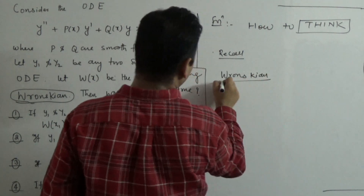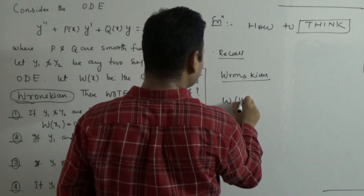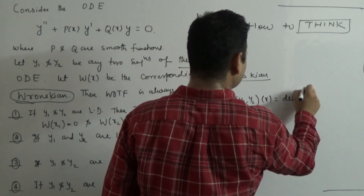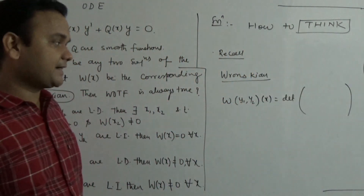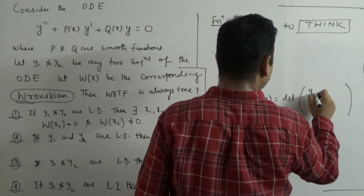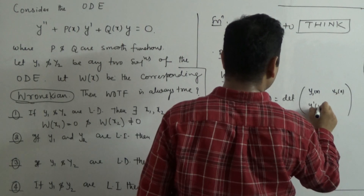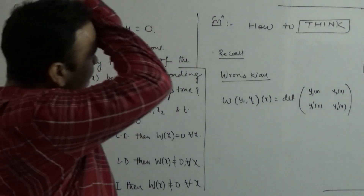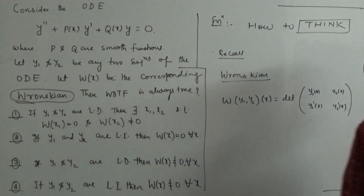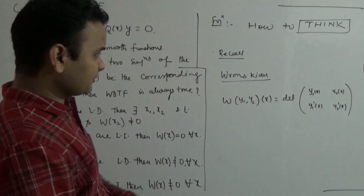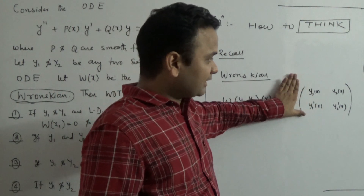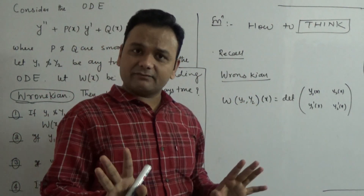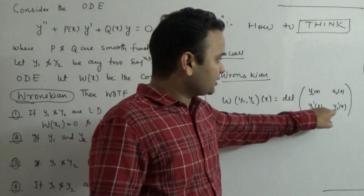The Wronskian of two functions is another function which can be written in terms of a determinant. The determinant is the 2×2 matrix with entries y1(x), y2(x) in the first row and their derivatives y1'(x), y2'(x) in the second row. This is the Wronskian of two functions.